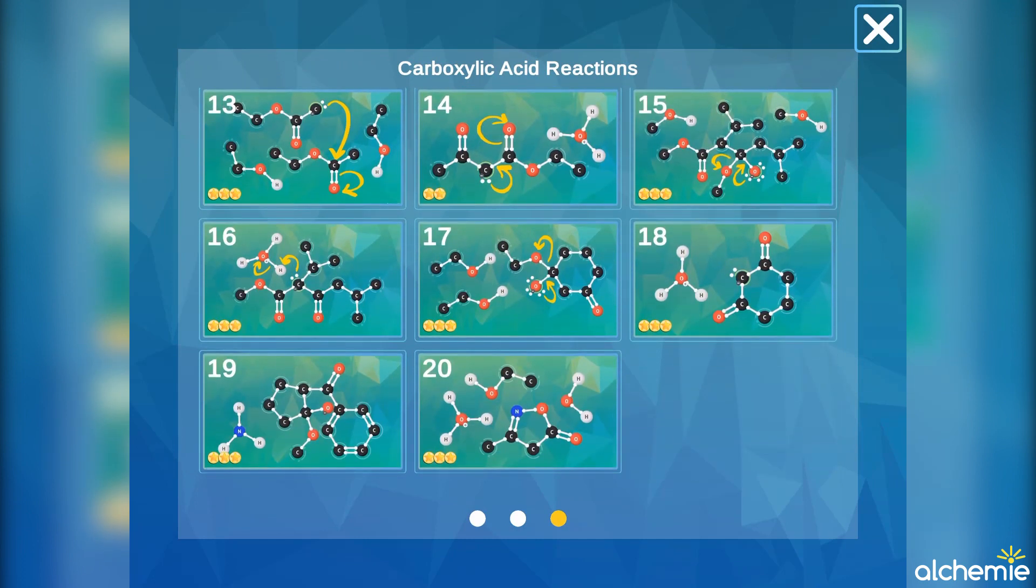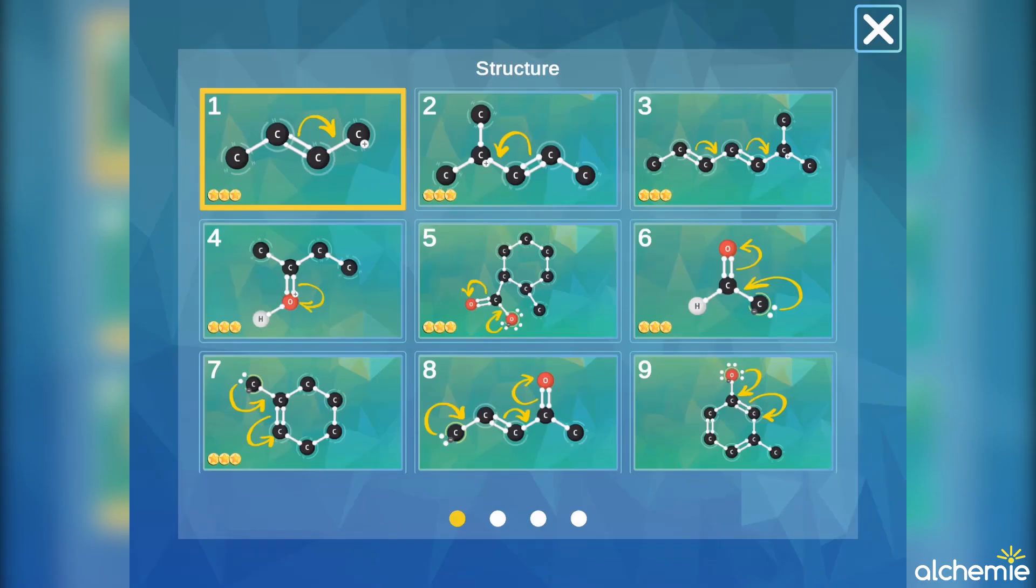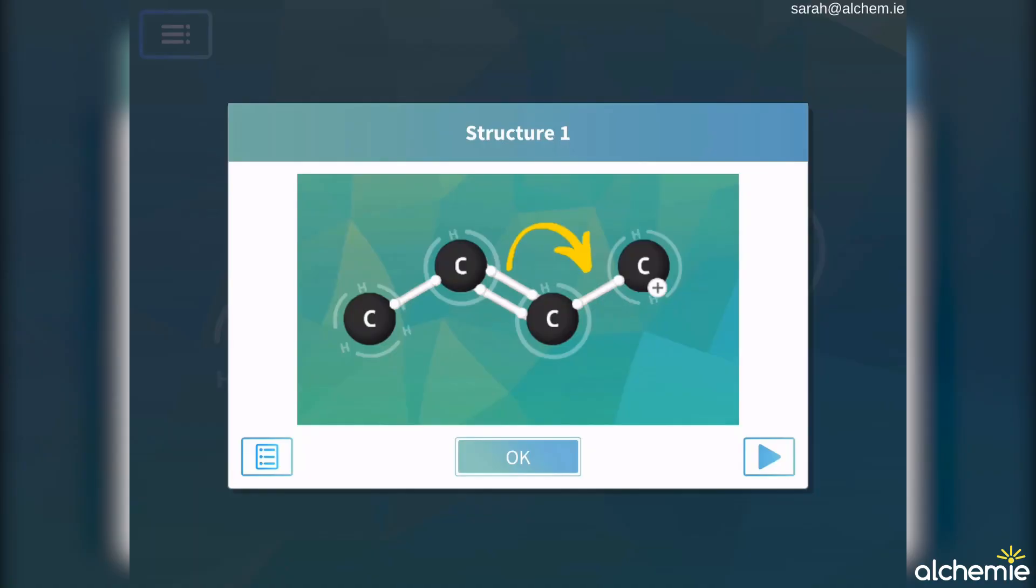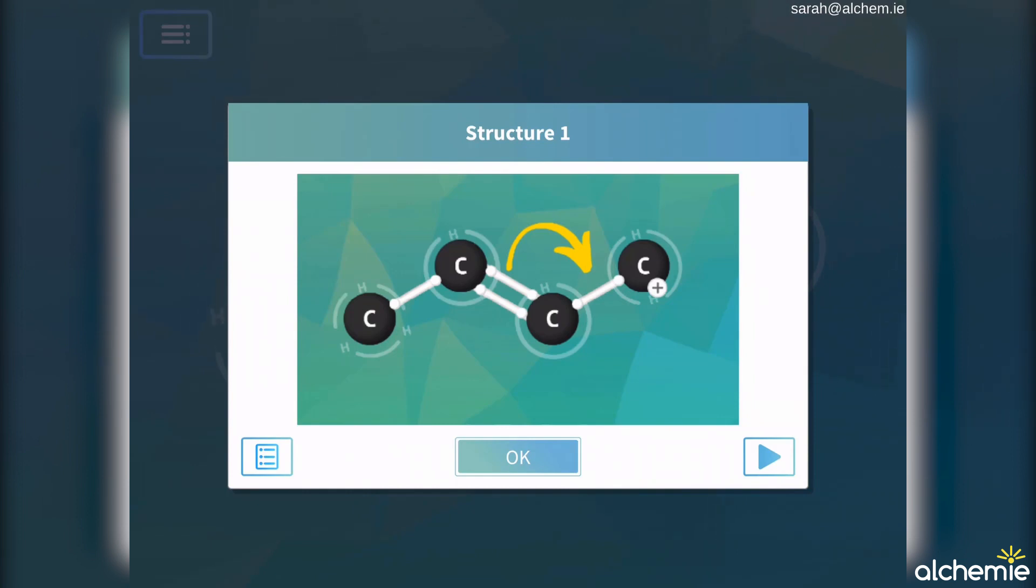Let's play through a puzzle so you can better understand what I mean. Here is the task card for structure one. You might recognize those curved yellow arrows, which are the conventional symbols used to describe the movement of electrons. In this case, it is showing how the pi bond is moved to generate the other resonance structure.